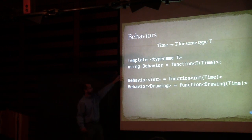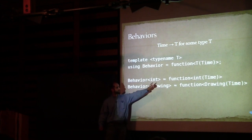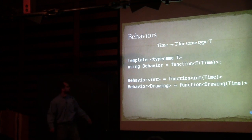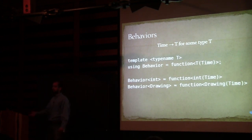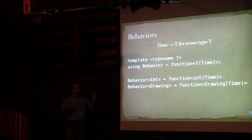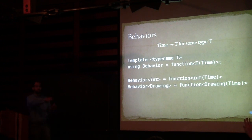We use a `using` expression to say that Behavior<T> is equal to a function of time. We don't actually implement it like this — this is our mental model, the implementation is different. But we don't have to think about the implementation when working with these programs. A Behavior<int> is like a function that takes in time and returns an int. A Behavior<Drawing> is like a function which takes in a time and returns a drawing. This is the basic idea of functional reactive programming.